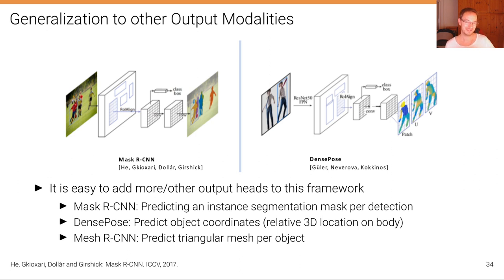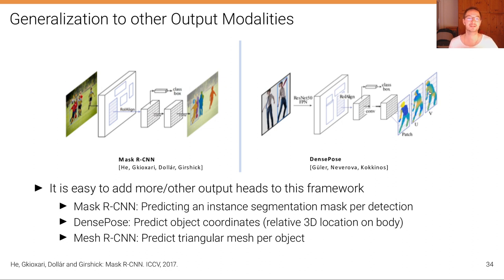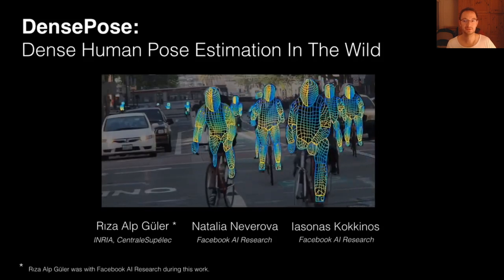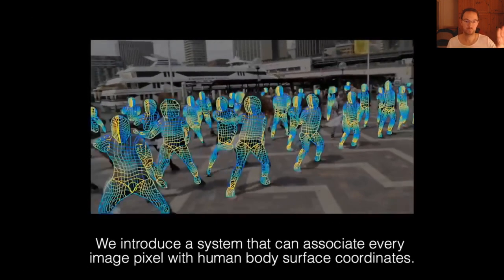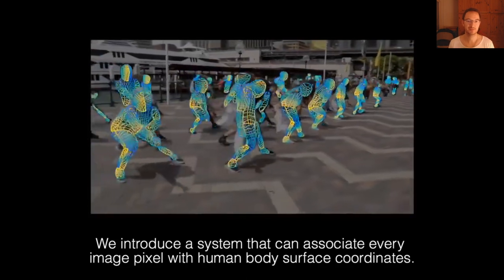We can also generalize this framework very easily to other output modalities by adding more output heads. For example, Mask RCNN from 2017 adds an instance segmentation mask per detection. DensePose predicts object coordinates — in this case, relative 3D locations on human bodies — and if you have a dataset with this annotated, you can predict it too. Mesh RCNN predicts triangular meshes per object. DensePose produces an amazing result where in parallel, in real time, object coordinates are predicted and then converted into human body pose estimates.